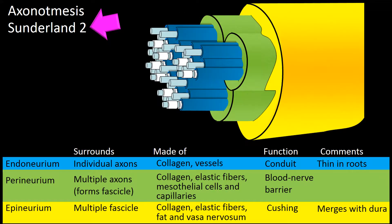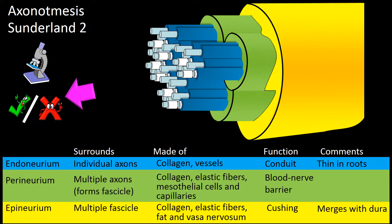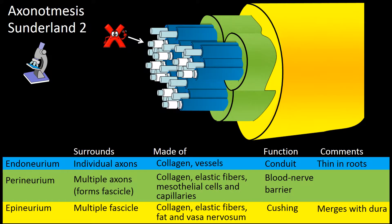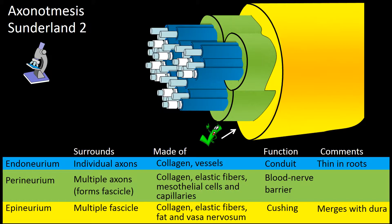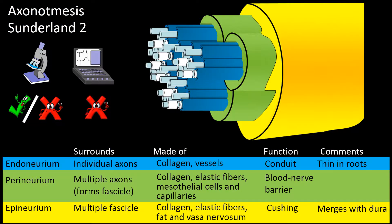Axonotmesis or Sunderland type 2, on light microscopy, presents abnormalities in some nerve elements but not others. Nerve fibers show evidence of pathology at the level of the axons and myelin, but the endoneurium, perineurium, and epineurium are normal. This mixed pattern of normal and abnormal elements found in light microscopy is associated with abnormal electrodiagnostic findings.